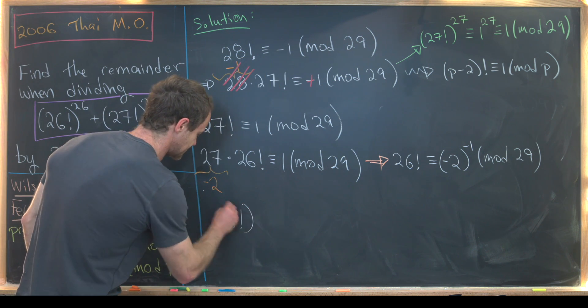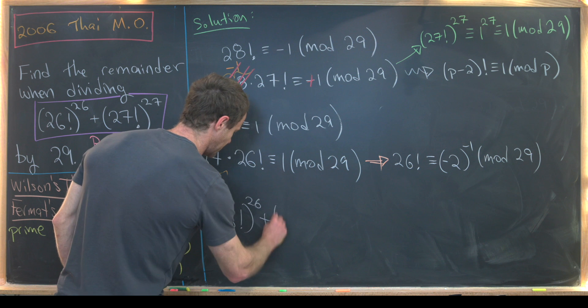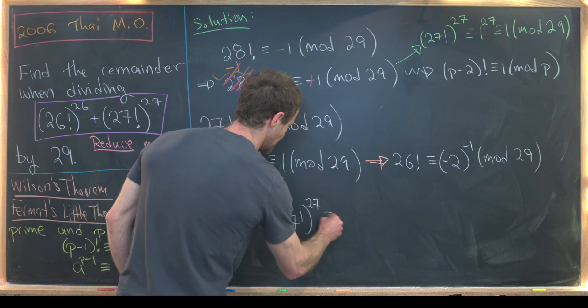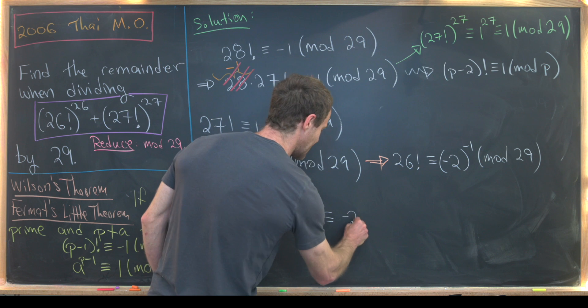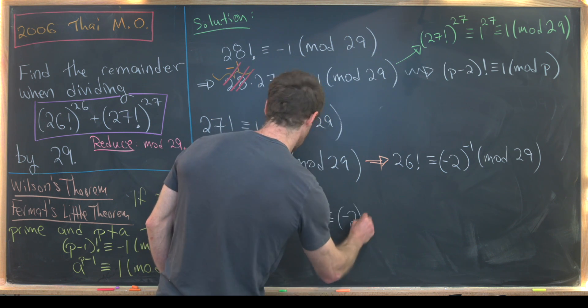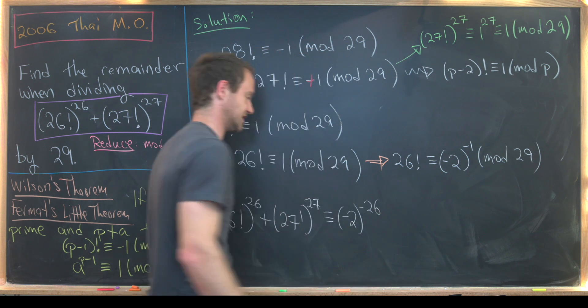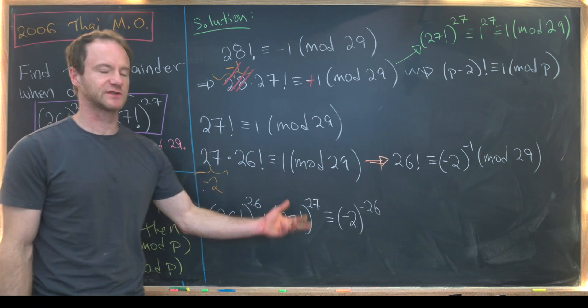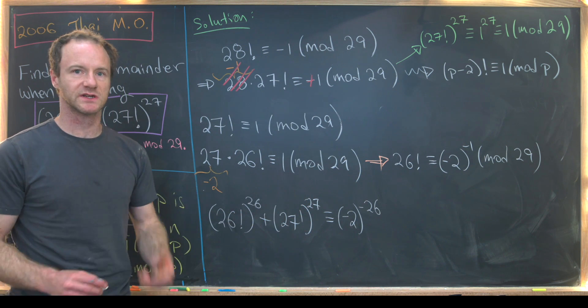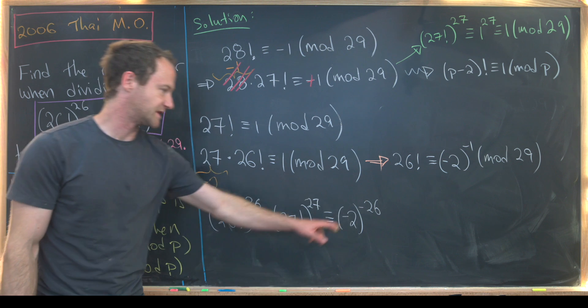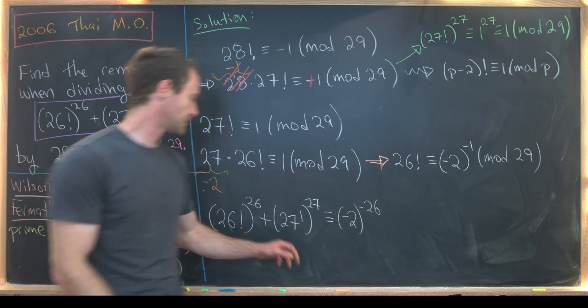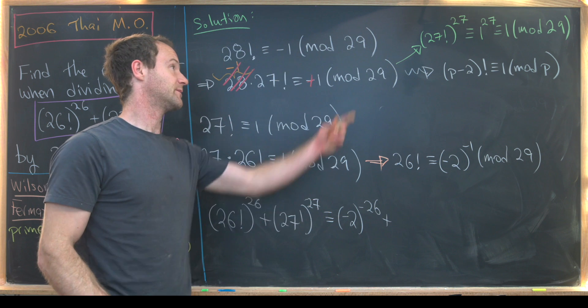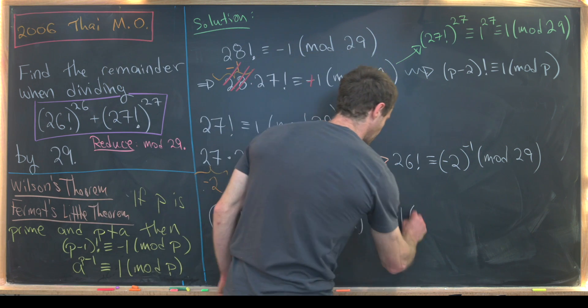We've got this 26 factorial to the 26 plus 27 factorial to the 27 will be congruent to minus 2 to the minus 26. So we've got something to the minus 1 power and then to the 26 power. So by exponent rules, which hold in modular arithmetic, we get this is to the minus 26 power. And then we'll have this is plus, like we said up there, 1 mod 29.